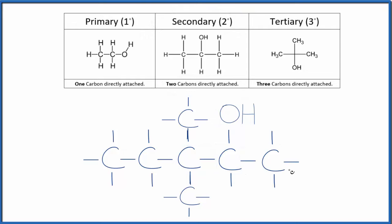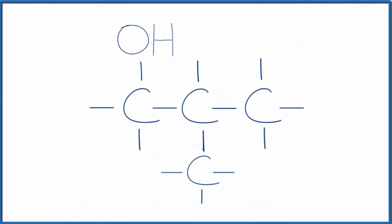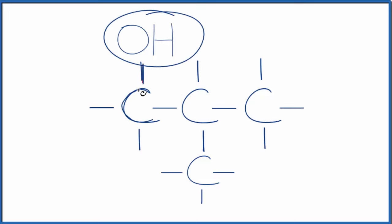How about this one? Pause and try this one. We find the OH group, and here's the carbon that it's bonded to right here. It's only bonded directly to one other carbon — that makes it a primary alcohol.